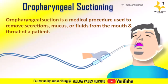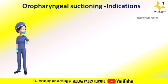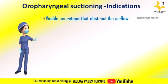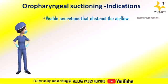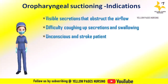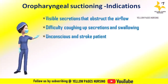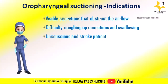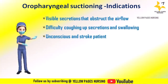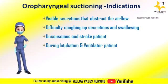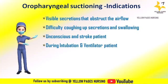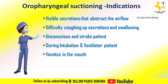The indications of oropharyngeal suction include: visible secretions like mucus, phlegm, or saliva that obstruct airflow; difficulty in coughing up secretions and swallowing; unconscious and stroke patients — in stroke patients there will be drooling and impaired swallowing; during intubation to clear oral secretions; and in ventilator depression to prevent micro-aspiration.